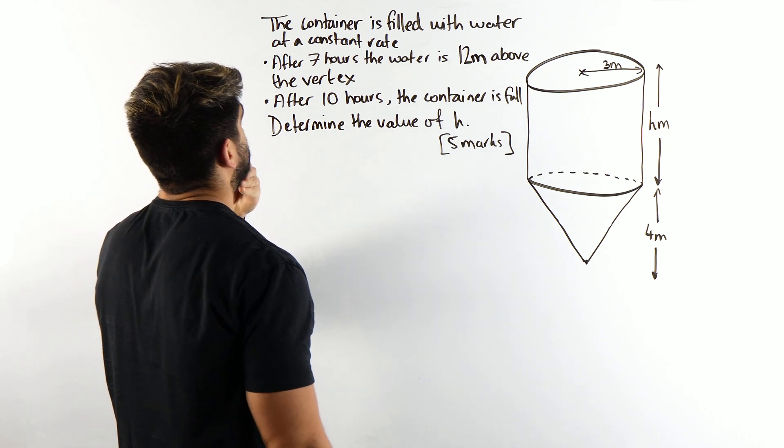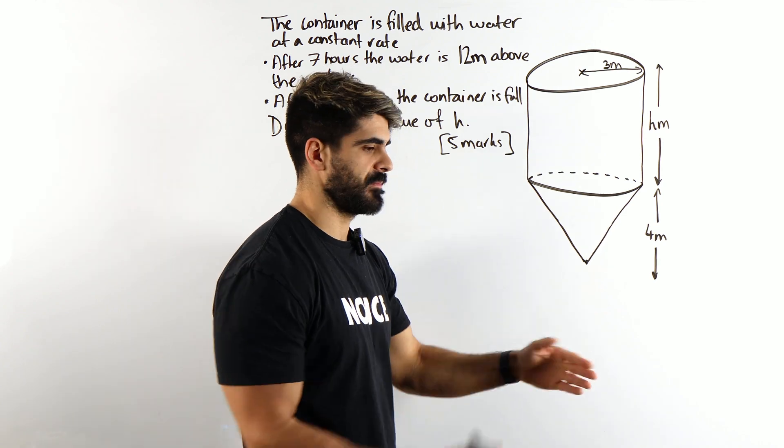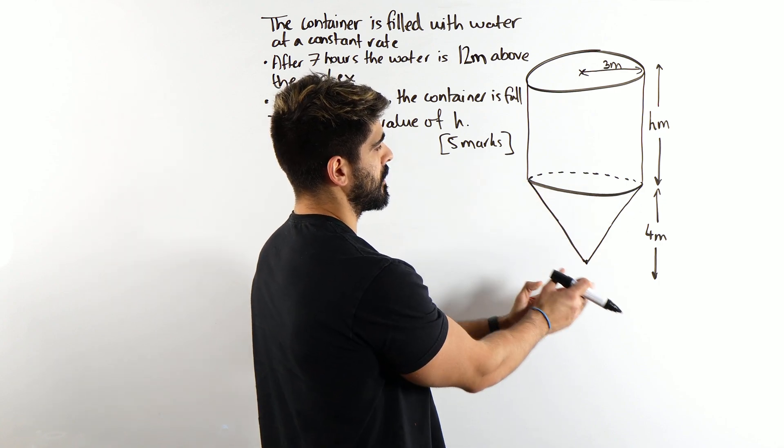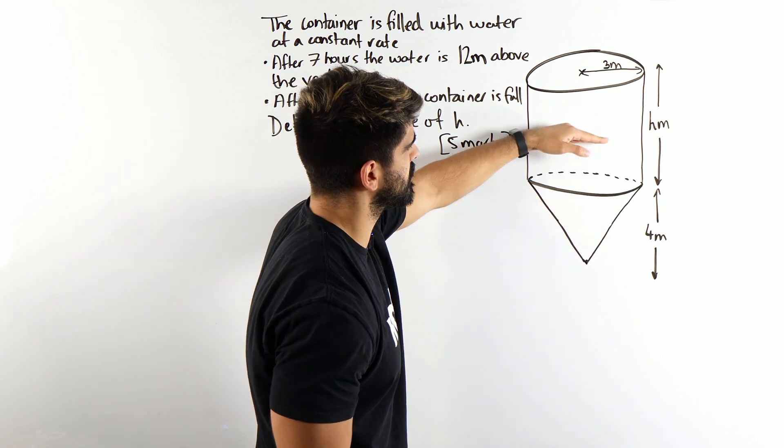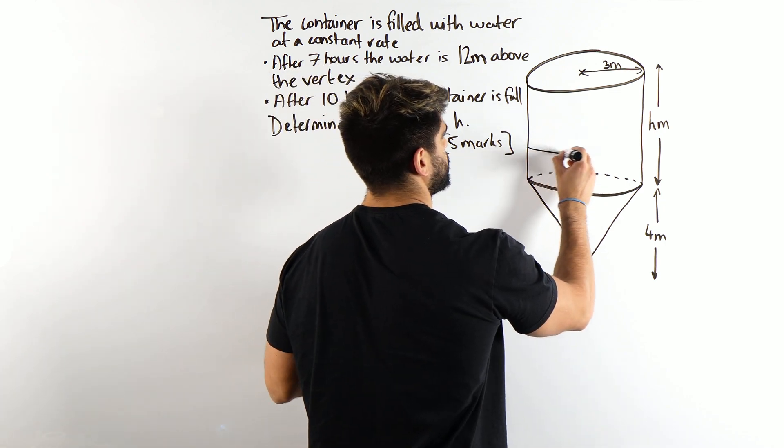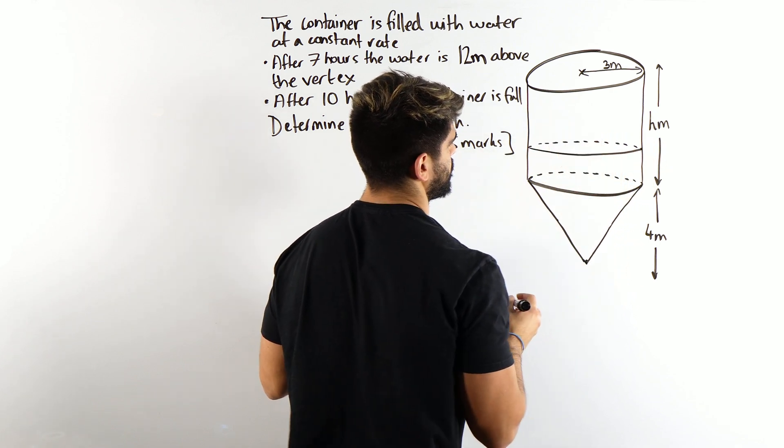So after seven hours, the water is 12 meters above the vertex. Vertex meaning the corner in terms of a cone where these two lines meet each other. So if this is four, 12 meters is going to be all the way up here. So that's quite a lot. The diagram is not to scale.